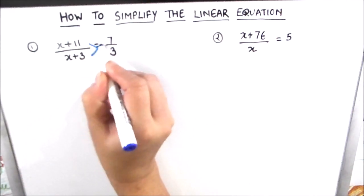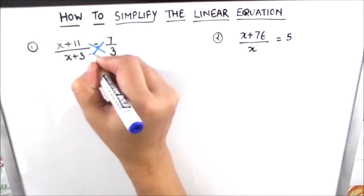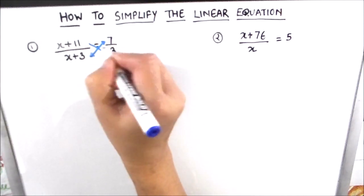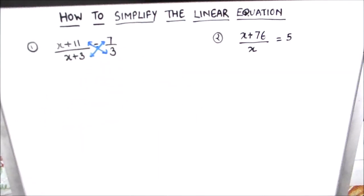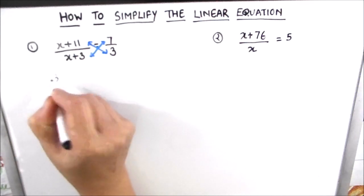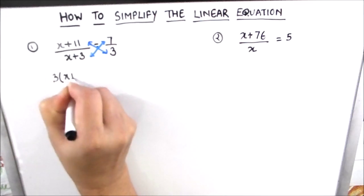For solving these equations we can directly use the cross multiplication method where we multiply the denominator of first fraction by the numerator of second and the denominator of second fraction by the numerator of the first fraction. So we will have 3 times (x+11) is equal to 7 times (x+3).